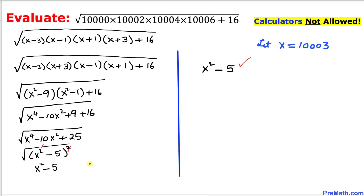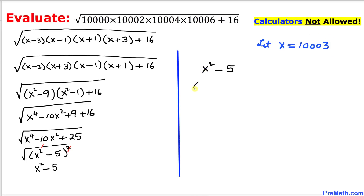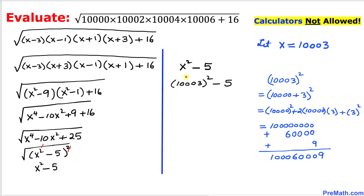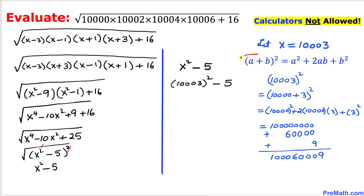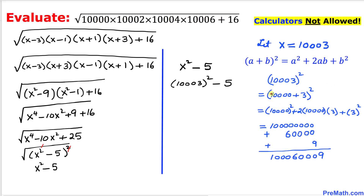Since we supposed x = 10,003, we substitute to get 10,003² − 5. To compute 10,003² without a calculator, we write it as (10,000 + 3)² and expand using the formula (a + b)² = a² + 2ab + b². That gives 100,000,000 + 60,000 + 9 = 100,060,009.